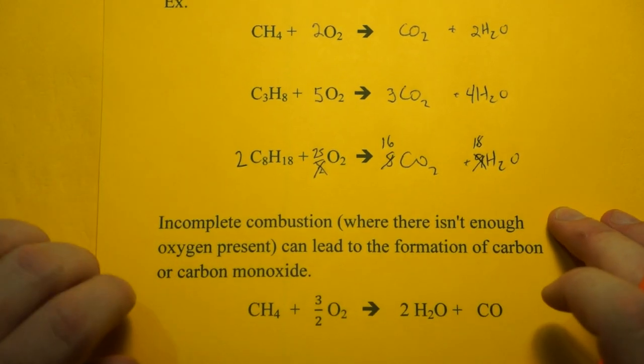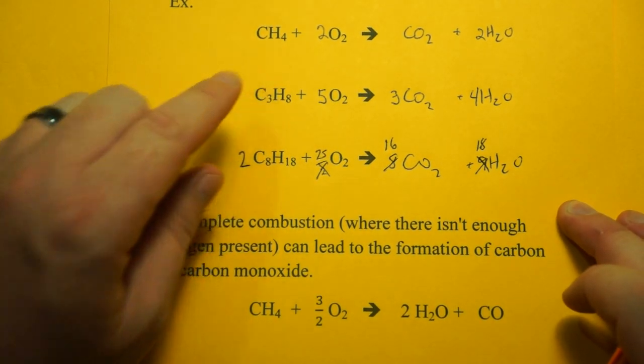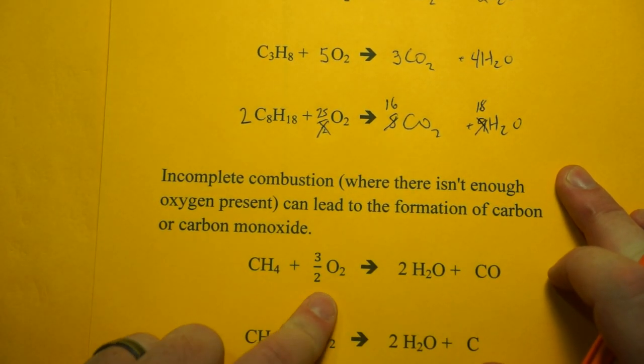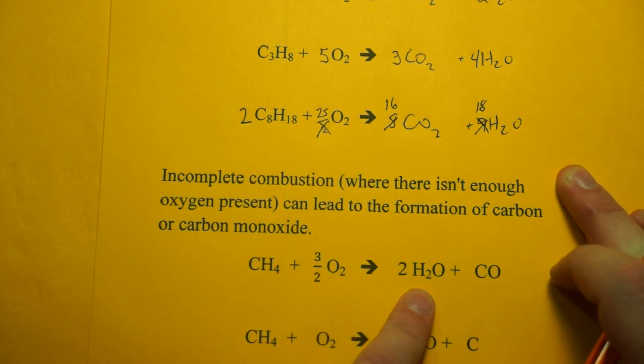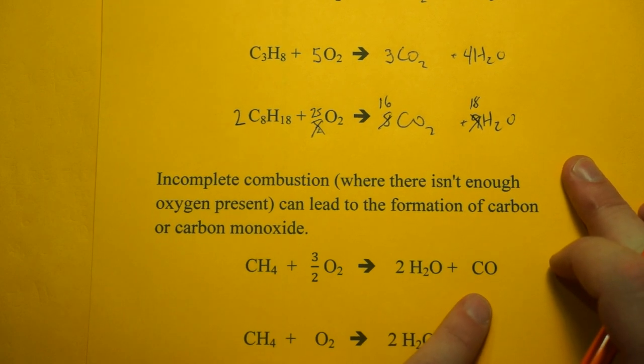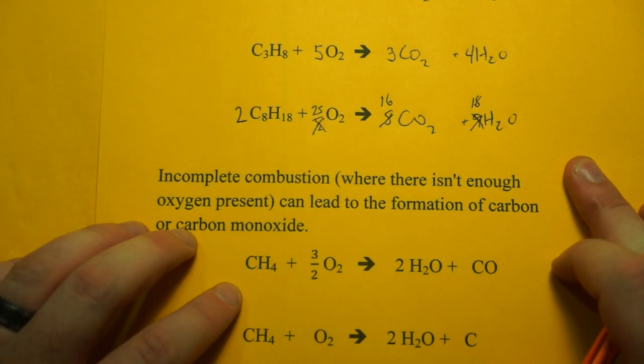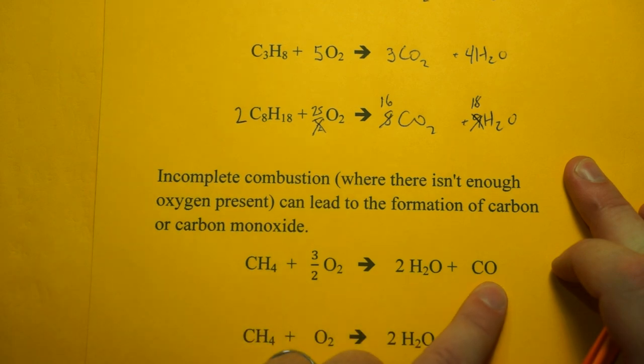If you look at the methane reaction, you need two moles of oxygen for every mole of methane. Here you're only getting one and a half moles of oxygen, which leads to, hydrogen's automatically going to take the oxygen and make water. That comes first. And whatever's left over is carbon. So there's just one oxygen left over for every one and a half moles. There's one mole left over. So you're going to get carbon monoxide.